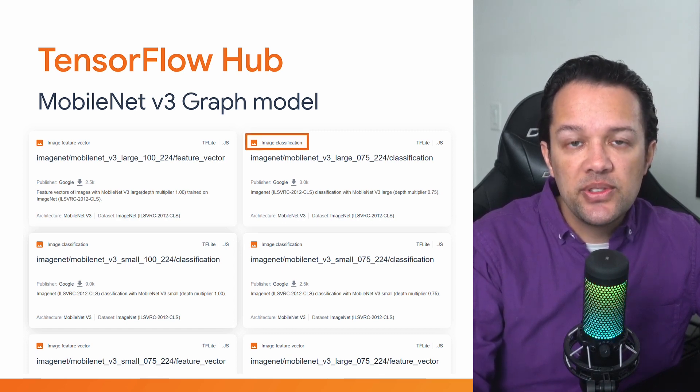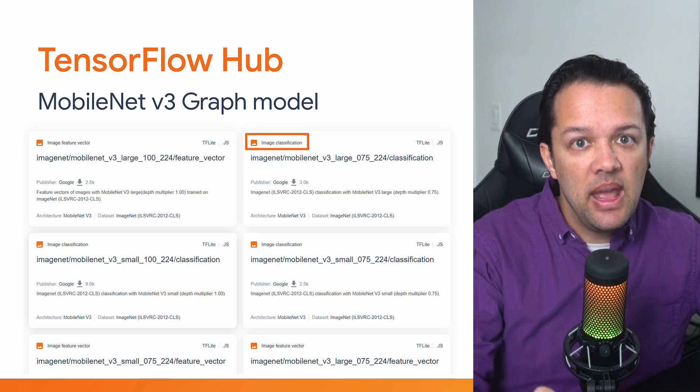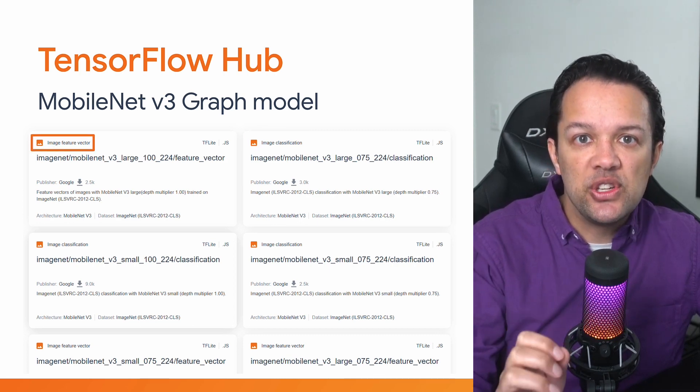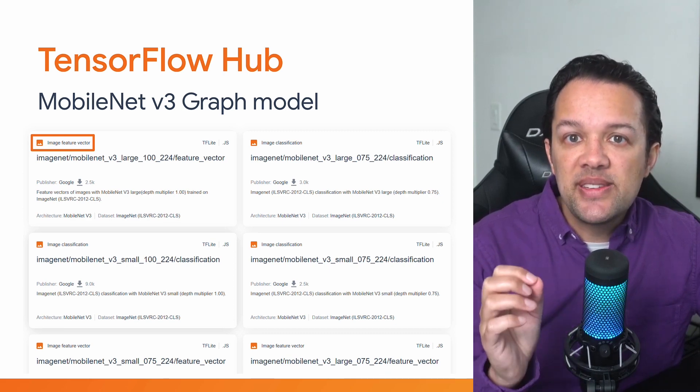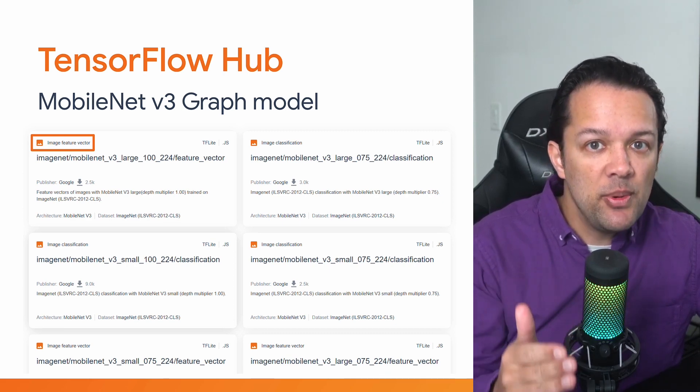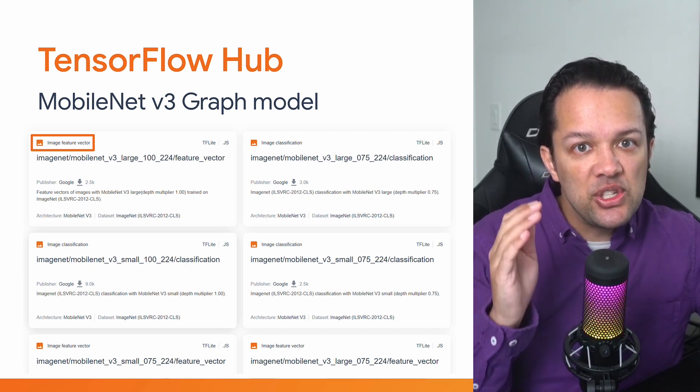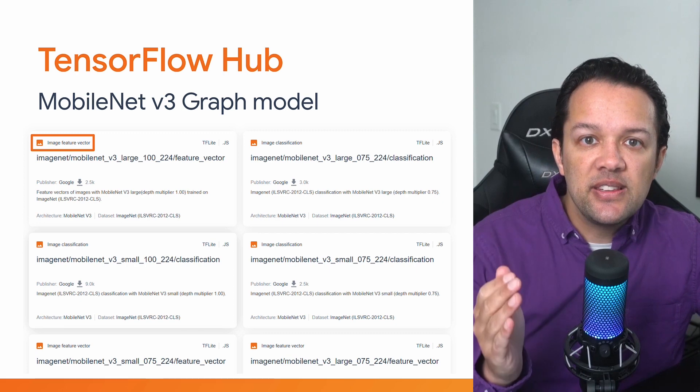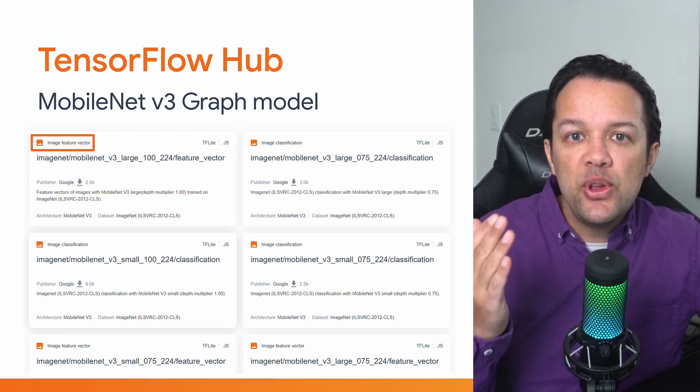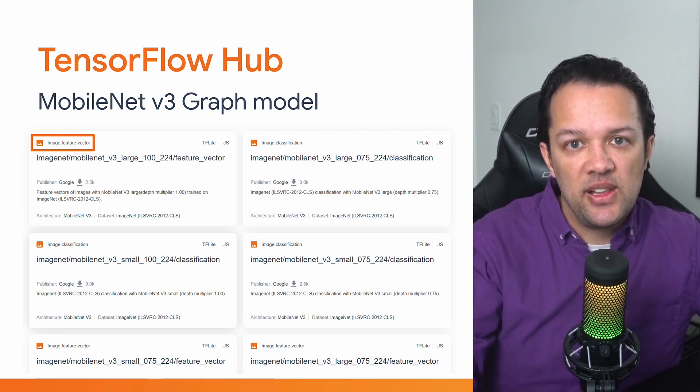Now, some of these results are of type image classification and others are of type image feature vector as shown. These image feature vector results are essentially the pre-chopped up versions of MobileNet that you can use to get the image feature vectors instead of the final classification. Now, models like this are often called base models from which you can then use to perform transfer learning.